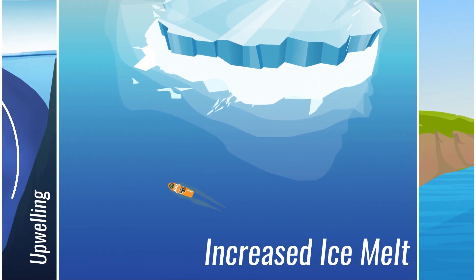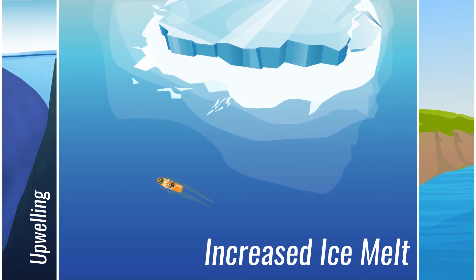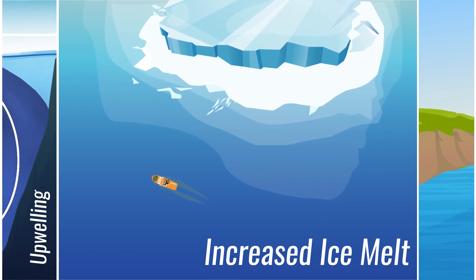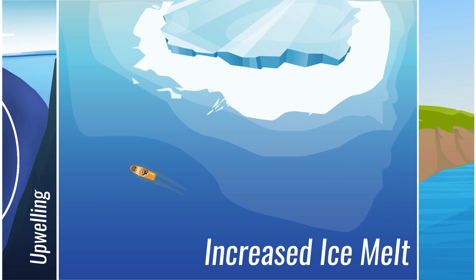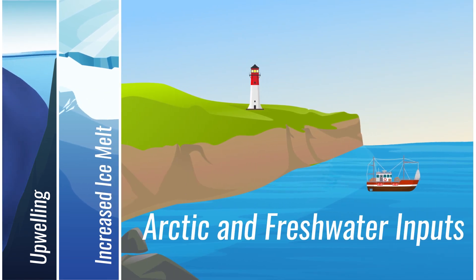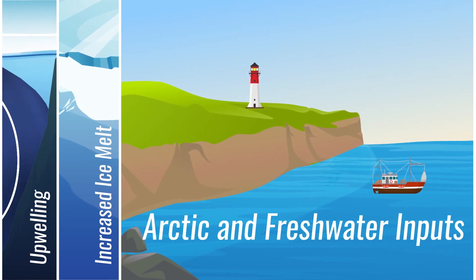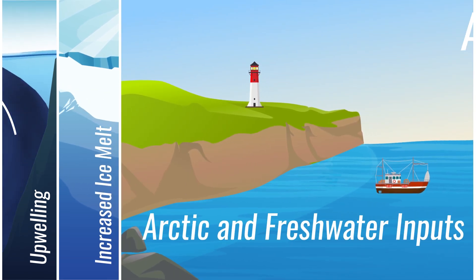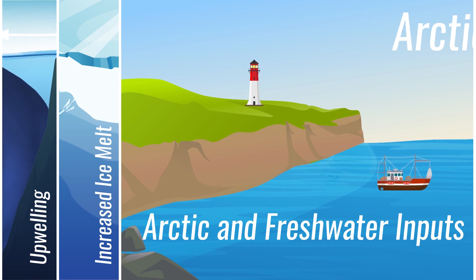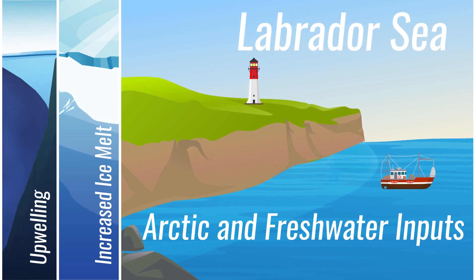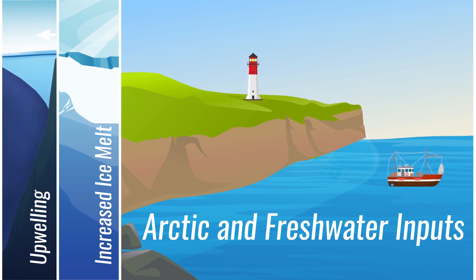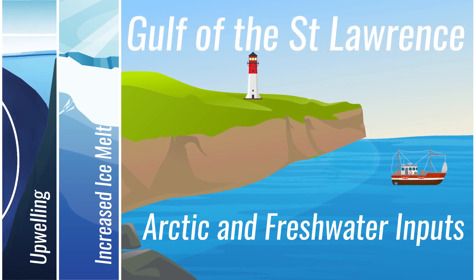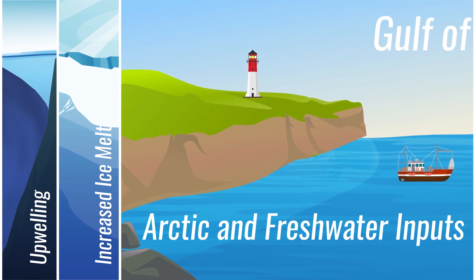Increased ice melt from glaciers and decreasing sea ice from warming temperatures in the Arctic cause OA to happen more quickly. In the Atlantic, OA is influenced by the flow from the Arctic, uptakes of large amounts of CO2 in the Labrador Sea caused by deep mixing, and a combination of surface freshwater inputs and low oxygen seawater at the bottom of the Gulf of St. Lawrence.